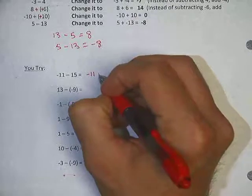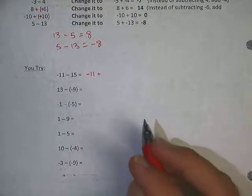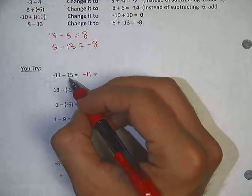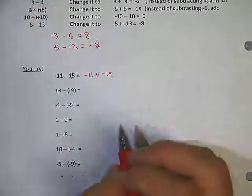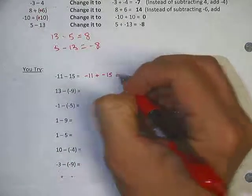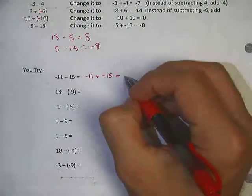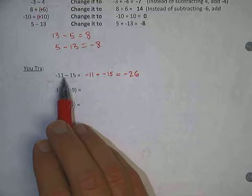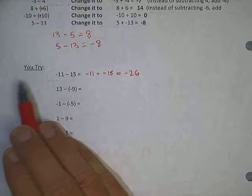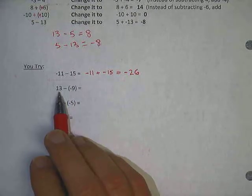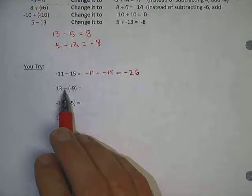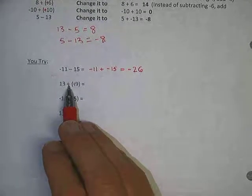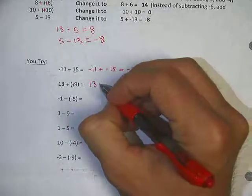Let's do some examples together. Negative 11 minus 15: keep the first number the same — keep, change, change. Subtraction becomes addition. But I can't just do that — I have to change the sign of the second number too. Positive 15 becomes negative 15. Now I'm adding two negatives, and adding negatives gives you more negatives. So this is negative 26. You can also think of a number line: if I'm at negative 11 and go down 15, farther into the negatives, I end up at negative 26.